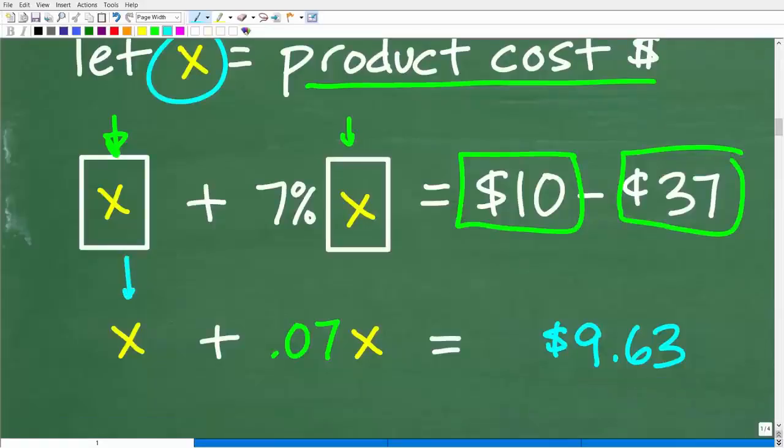So let's use some algebra here to actually build this equation. So x is the cost of the product. Now, the sales tax, the way we calculate percentage, is going to be 7% of the cost of the product. So when you want to find the percent of a number, we're going to have to change that percent to a decimal. So 7% is the same thing as the decimal 0.07.